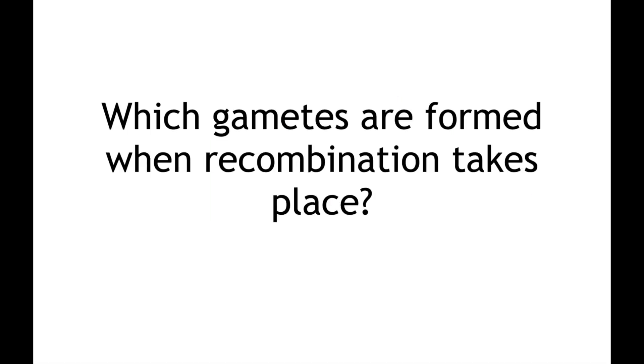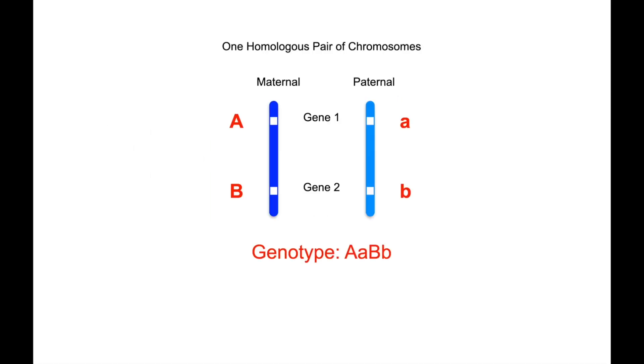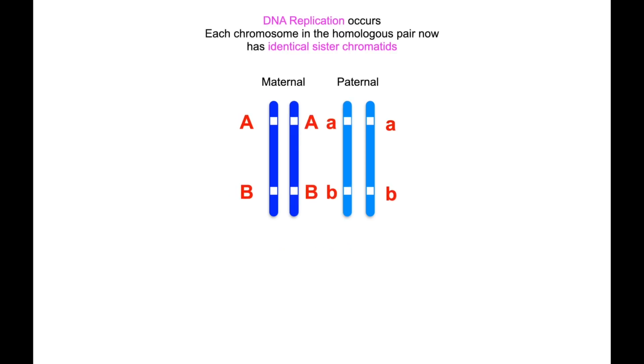So which gametes are formed when recombination takes place? Here we've started with exactly the same homologous pair of chromosomes as we had a moment ago. And once again, as normal, DNA replication occurs.